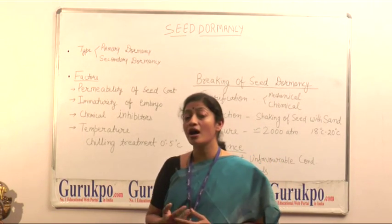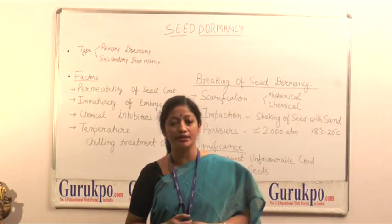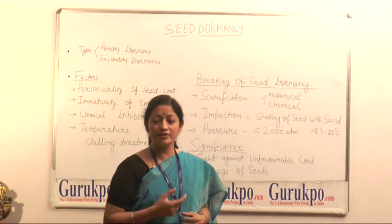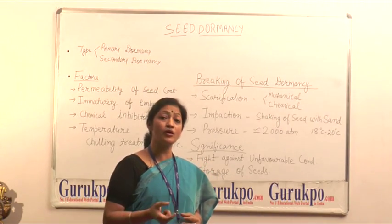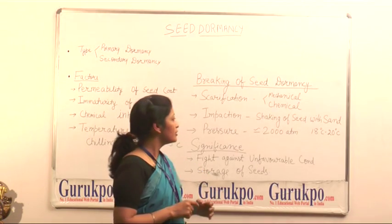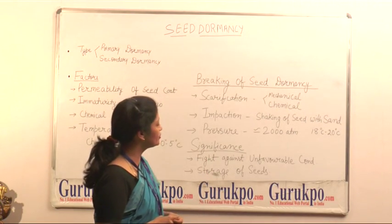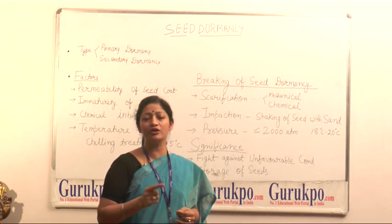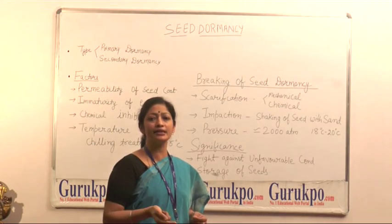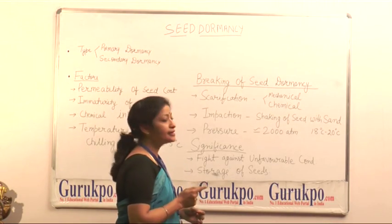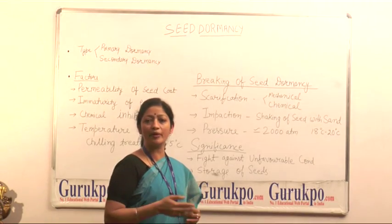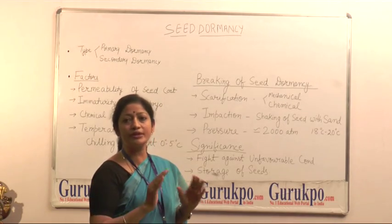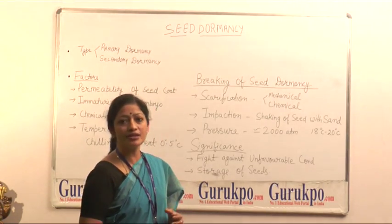Now the question arises: how can we break seed dormancy? The first method is scarification, by which we can break all types of dormancy caused by the seed coat. There are two methods: first is the mechanical method, in which we can file or chip the seeds so that they can easily germinate. Another method is the chemical method, by treatment with H₂SO₄ to dissolve the seed coat so that the seed can easily germinate.